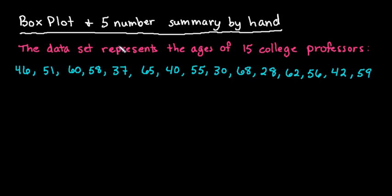Hi, for this video we're going to create a box plot or also known as a box and whisker plot and also the five number summary by hand just in case you're not able to use graphing technology to help you out. So what we have here is a data set that represents the ages of 15 college professors. It is given to us unordered and in order for us to come up with a five number summary first and to create the box plot we have to put it in order.